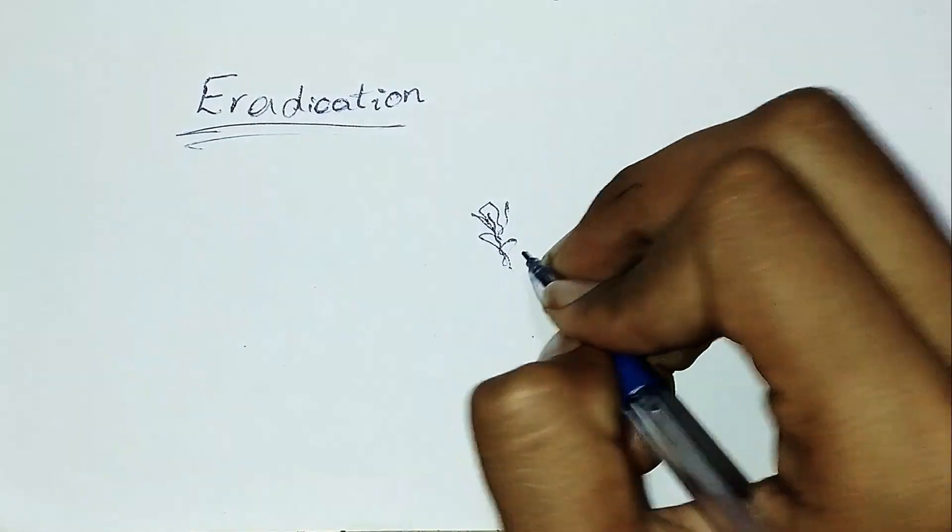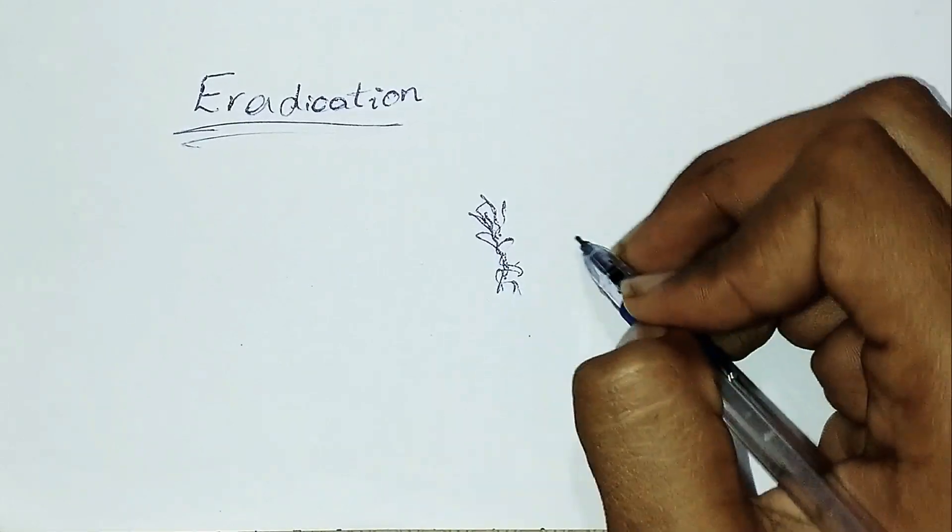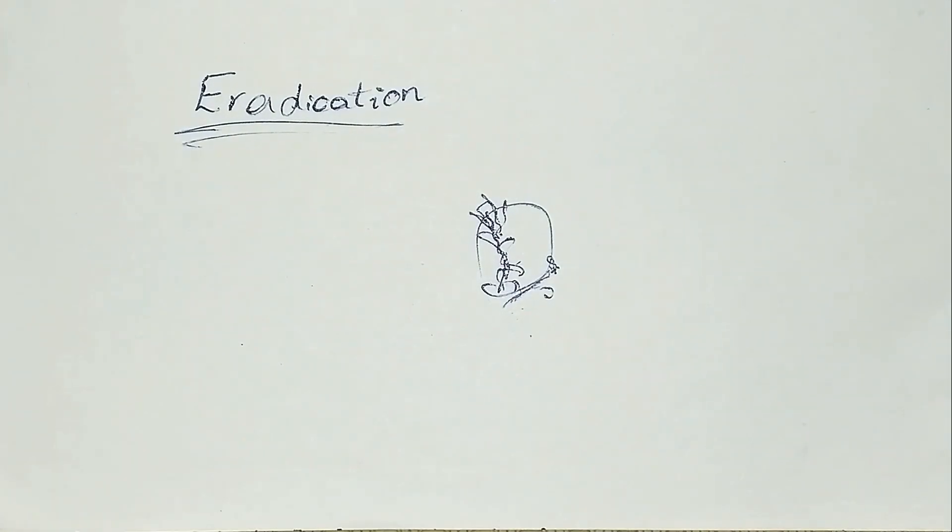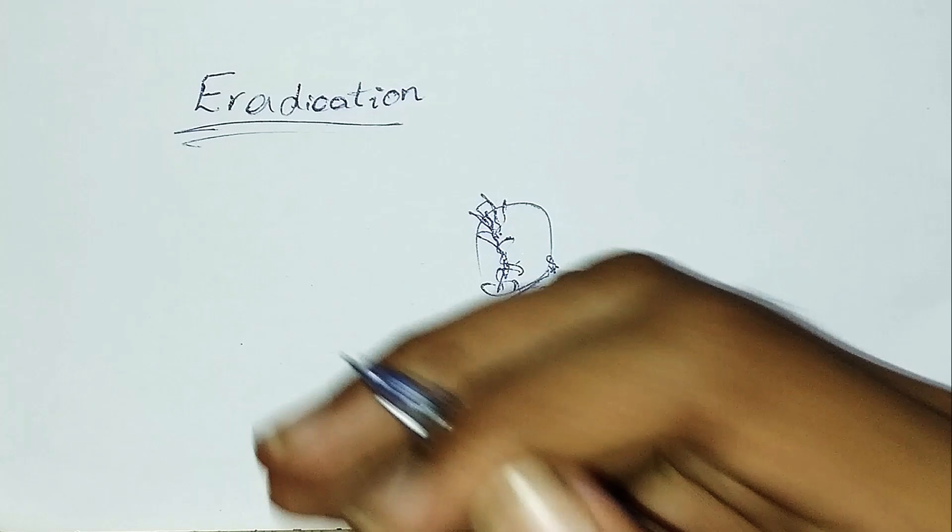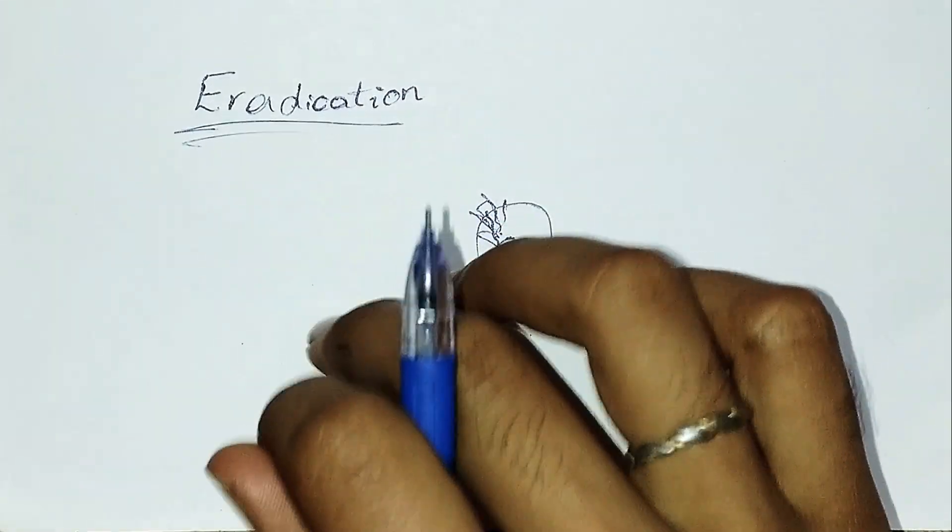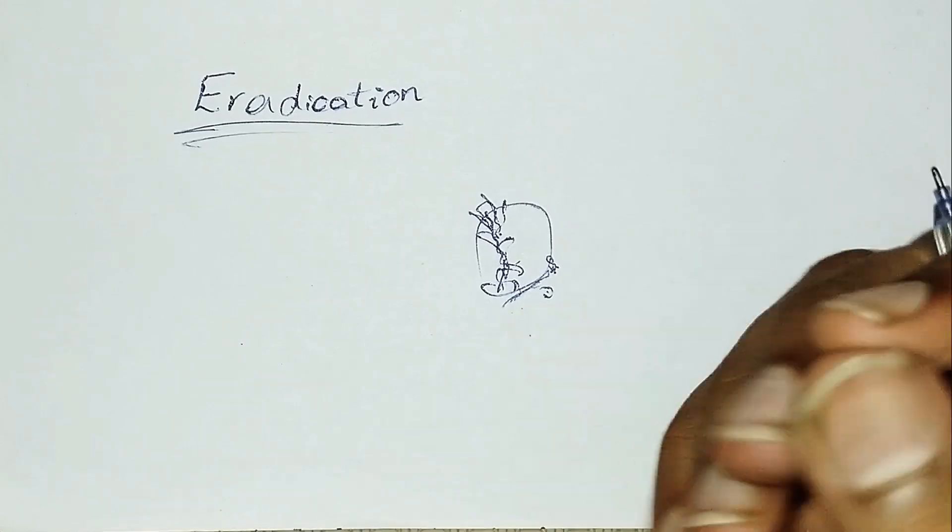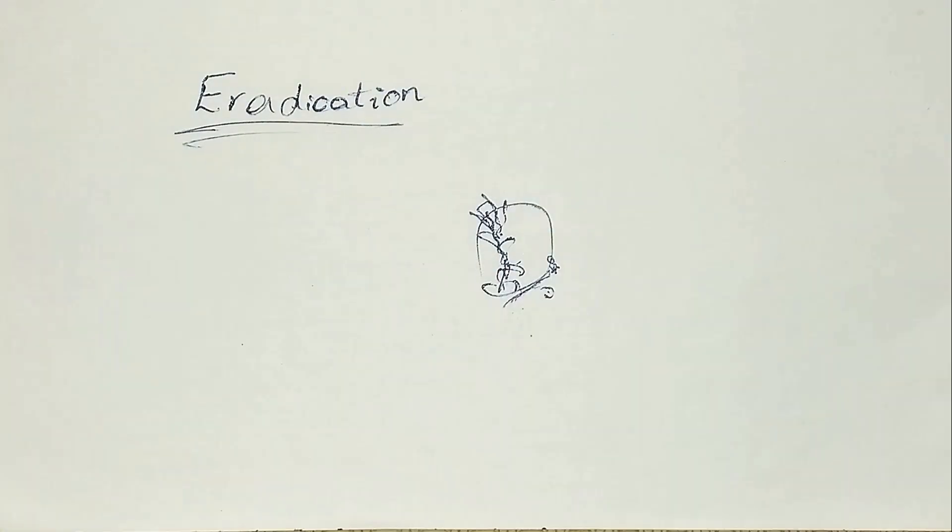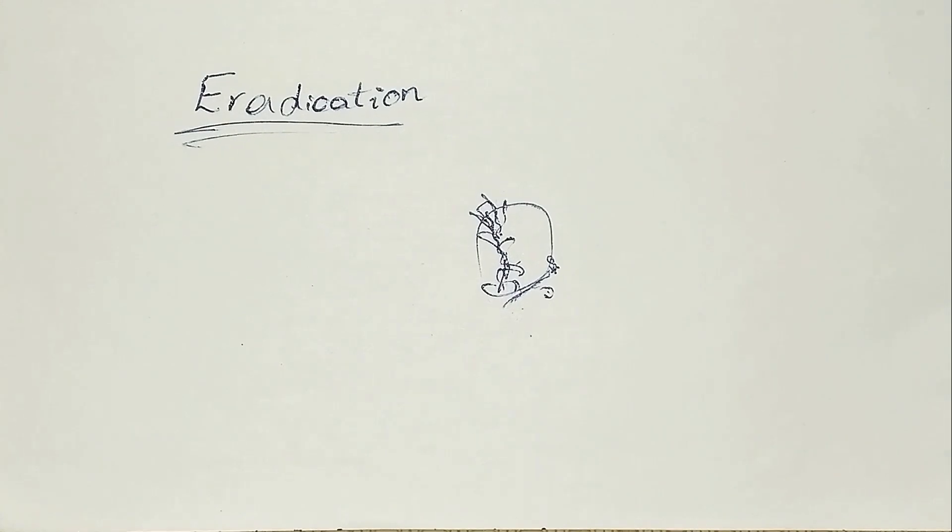This is the eradication method where weed plants are completely removed. The eradication method plays a crucial role. However, compared to prevent and control, this method is more costly and difficult. So these are the prevention, control, and eradication methods.